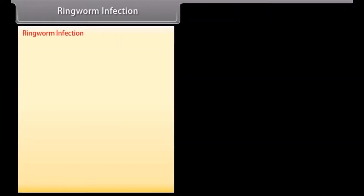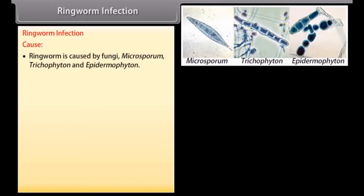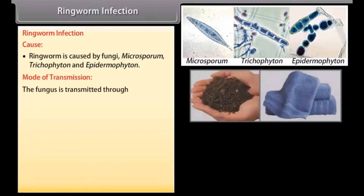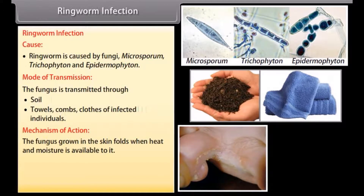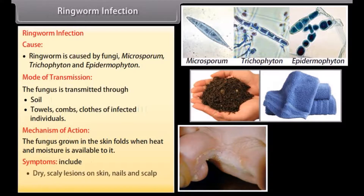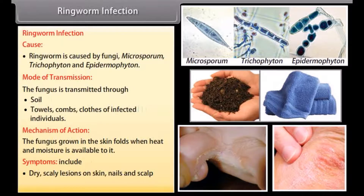Ringworm infection is caused by fungi: Microsporum, Trichophyton, and Epidermophyton. The fungus is transmitted through soil, towels, combs, and clothes of infected individuals. The fungus grows in skin folds where heat and moisture are available. Symptoms include dry, scaly lesions on the skin, nails, and scalp, and intense itching around the lesions.